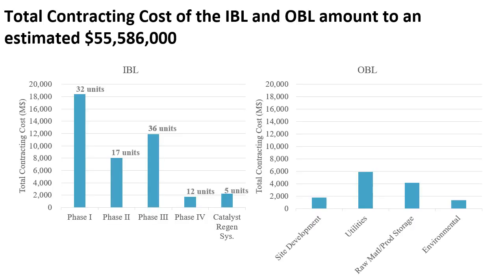Total contracting costs of the IBL and OBL amount to an estimated $55,586,000. The inside battery limit accounts for 76% of the cost, covering pumps, heat exchangers, towers, and drums. Phase 1 has the highest cost due to three alkylation reactors, contributing $8.1 million. The transalkylation reactor in Phase 2 costs $732,000. Phase 3 runs three distillation columns at high temperatures. Phase 4 consists mainly of pumps and has the lowest cost. The outer battery limit accounts for the other 24%, including site development and other operational capital.